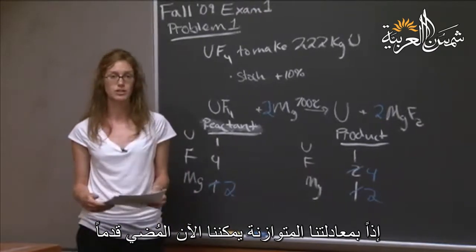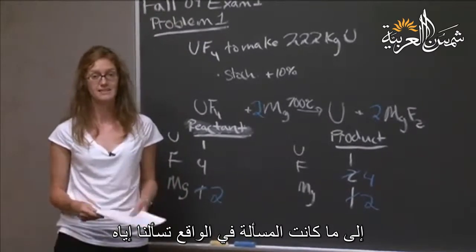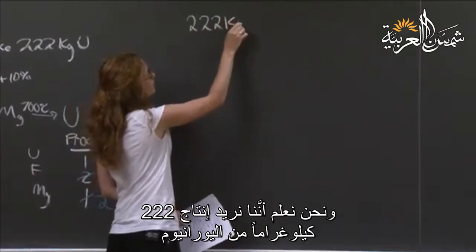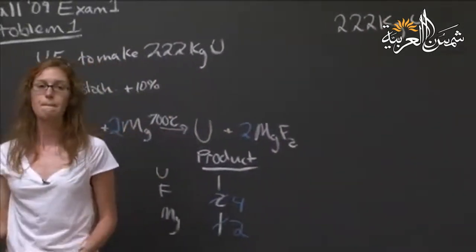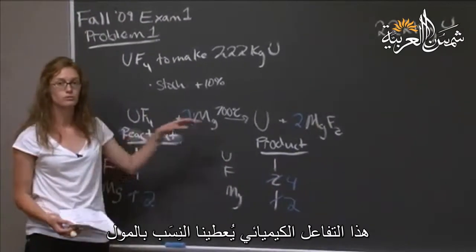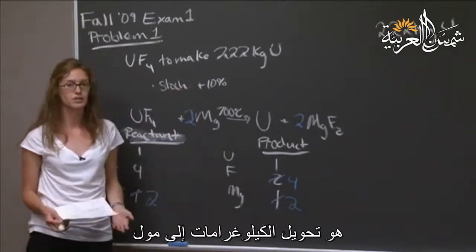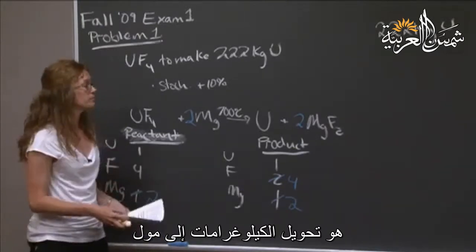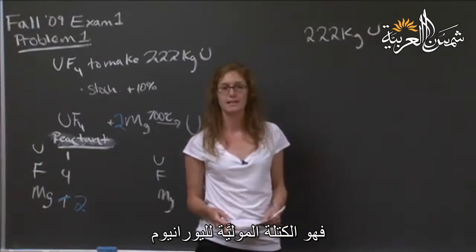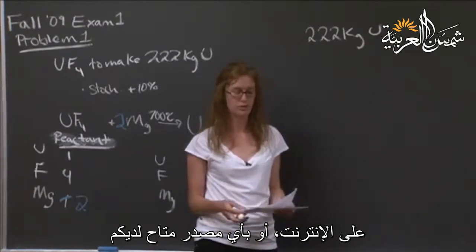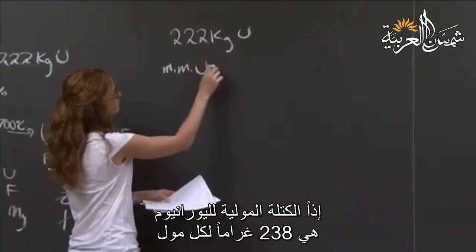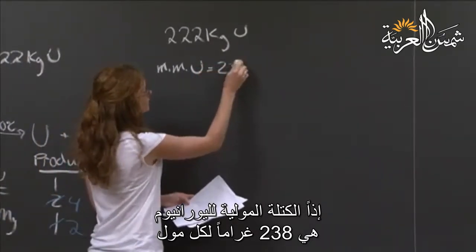With our balanced equation, we can move on to what the question is actually asking. We want to make 222 kilograms of uranium and need to figure out how much uranium tetrafluoride is needed. The chemical reaction gives us mole ratios, but right now we have kilograms. So the first thing we need to do is convert kilograms to moles using stoichiometry. We need the molar mass of uranium, which you can look up on the periodic table — it is 238 grams per mole.